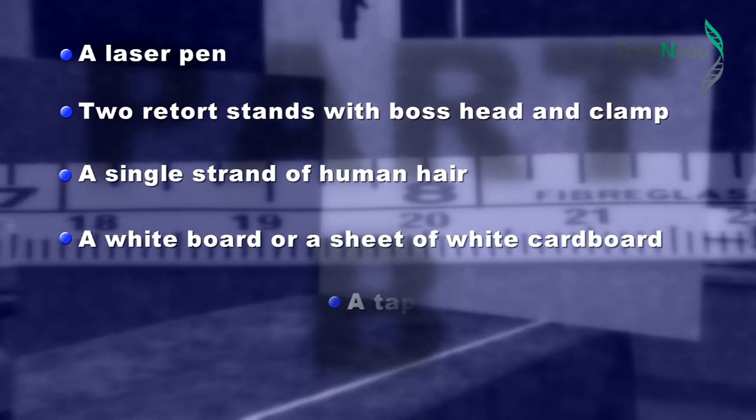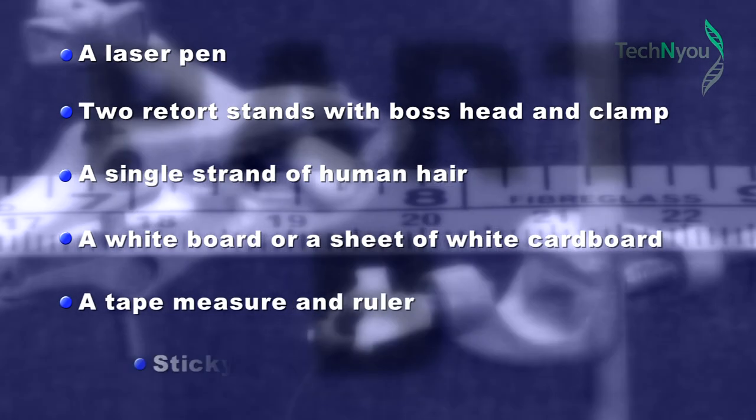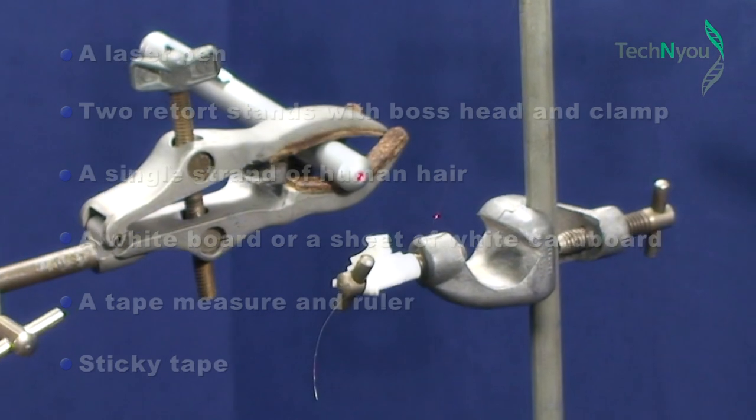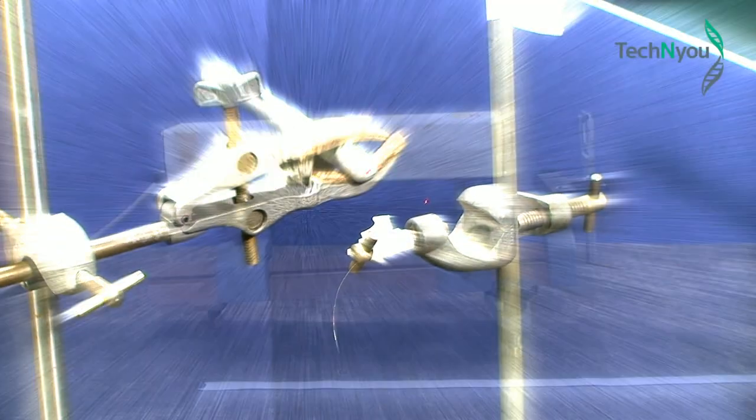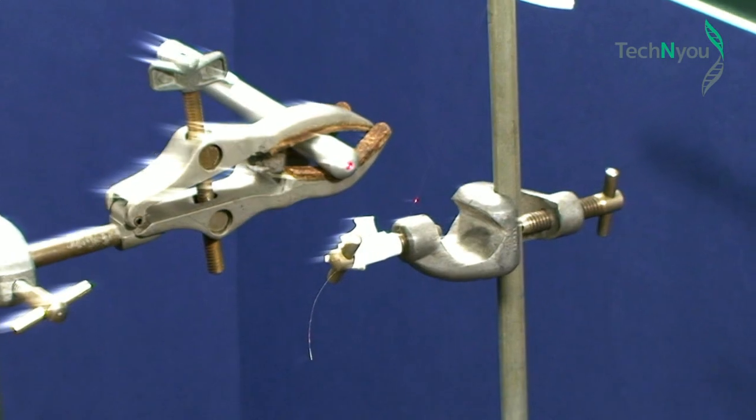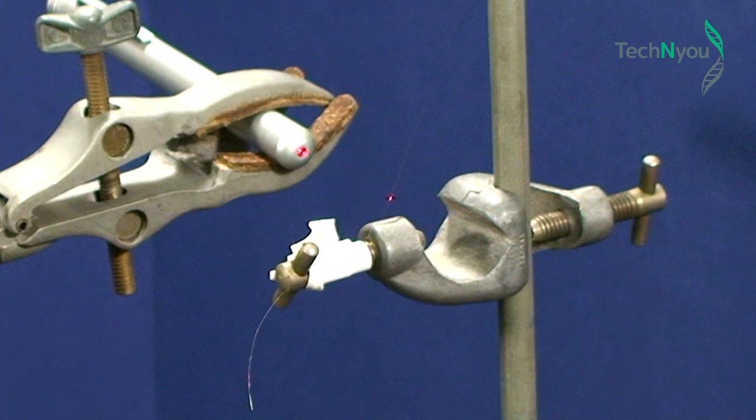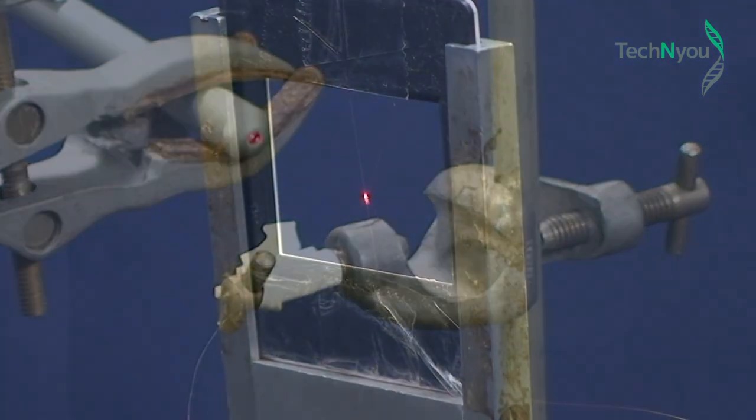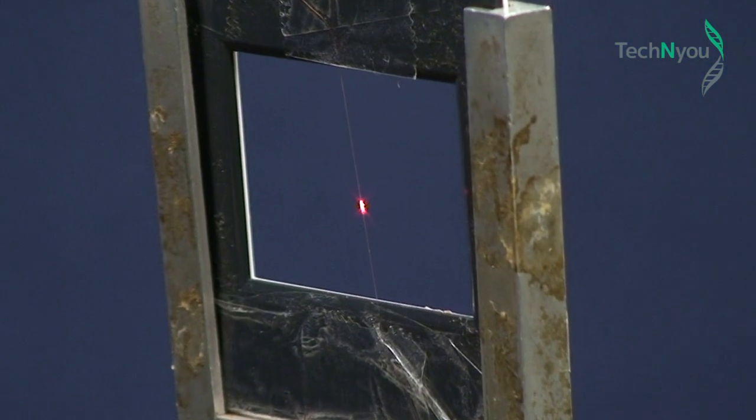The experiment is in two parts. We use one technique, but two different sets of equipment to project a red laser beam past a single strand of human hair suspended in a slide frame.